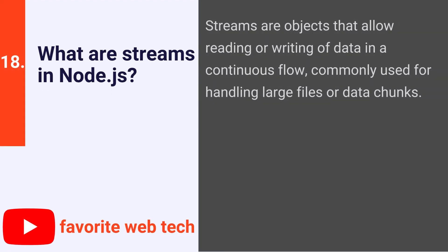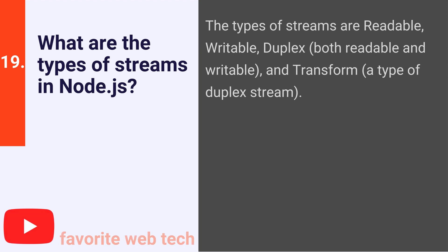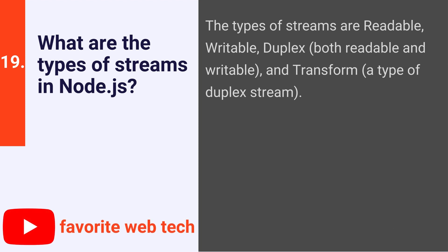What are streams in Node.js? Streams are objects that allow reading or writing of data in a continuous flow, commonly used for handling large files or data chunks. What are the types of streams in Node.js? The types of streams are readable, writable, duplex (both readable and writable), and transform, a type of duplex stream.